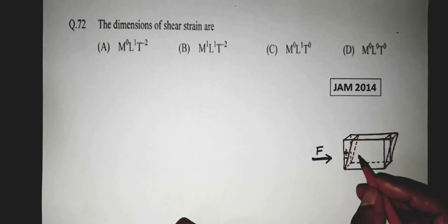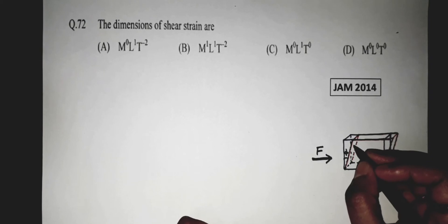That is, this object is deformed to an angle phi. Now, this phi is given by the ratio of the length of deformation. That is, if it is X, then the length of deformation is X. This is X.